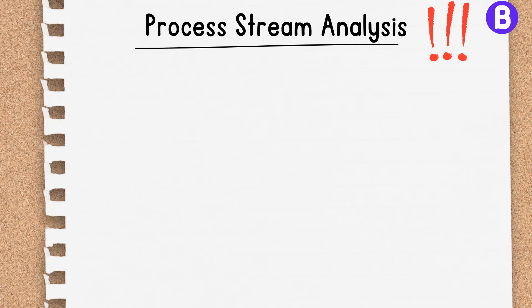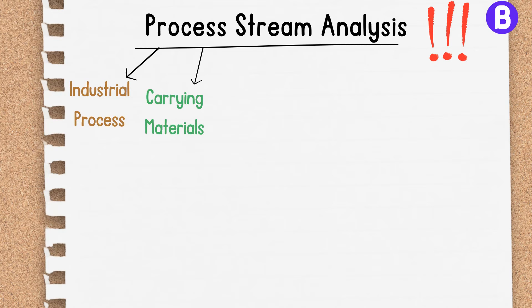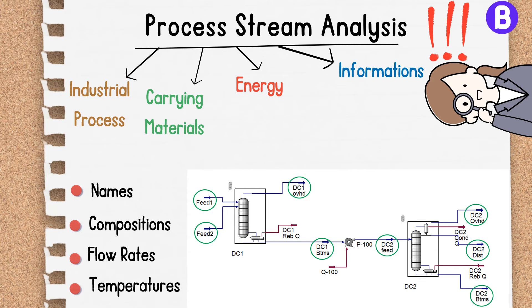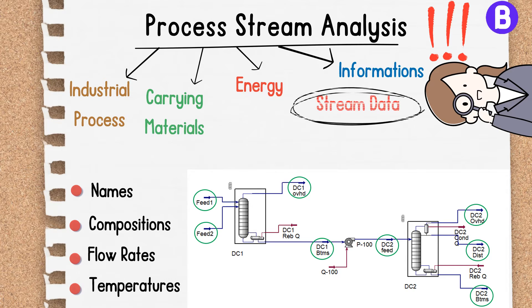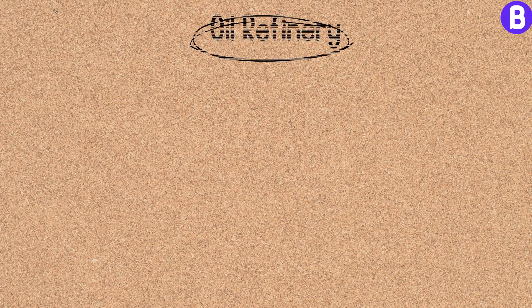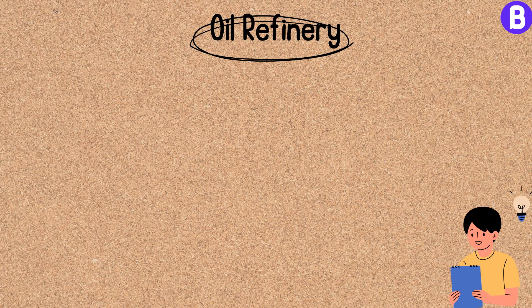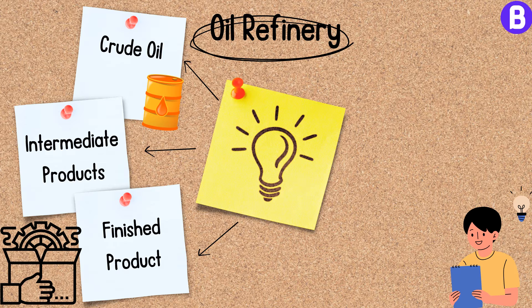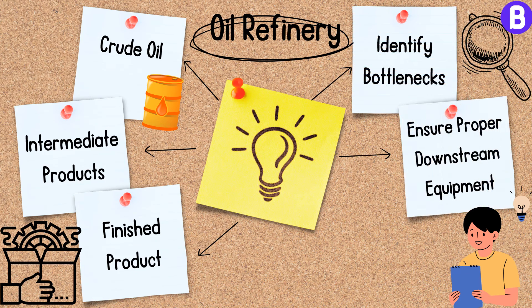Process streams are the lifeblood of any industrial process, carrying materials, energy, or information throughout the system. A well-constructed PFD provides detailed information about the main process streams, including their names, compositions, flow rates, and temperatures, usually accompanied by heat and mass balance tables. For example, in an oil refinery PFD, streams such as crude oil, intermediate products, and finished products are displayed, helping identify bottlenecks and ensure proper downstream equipment and pipe sizing.